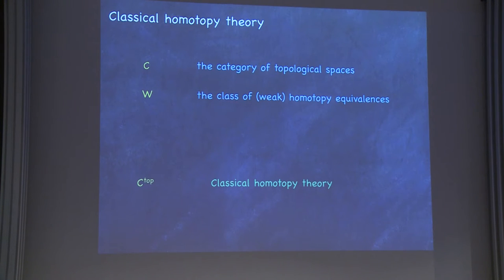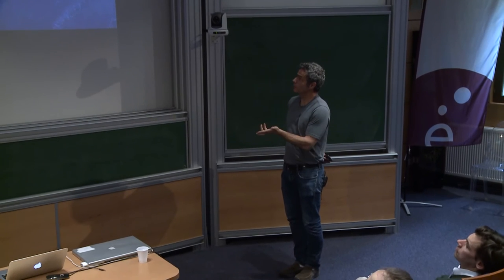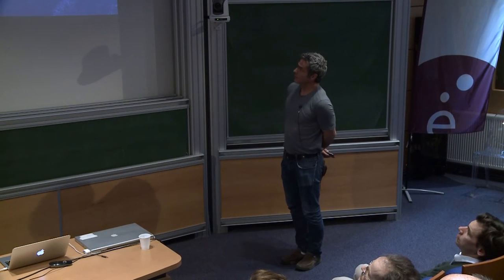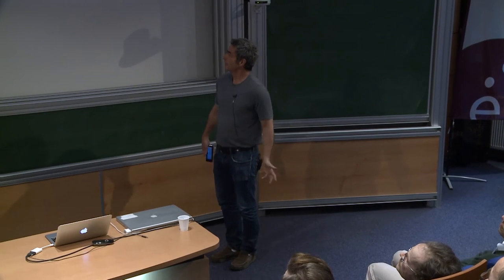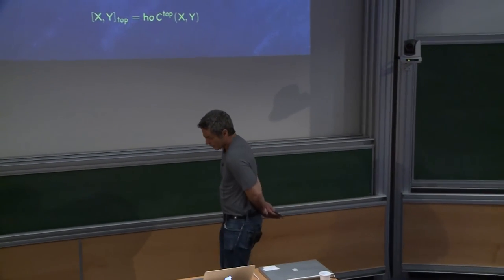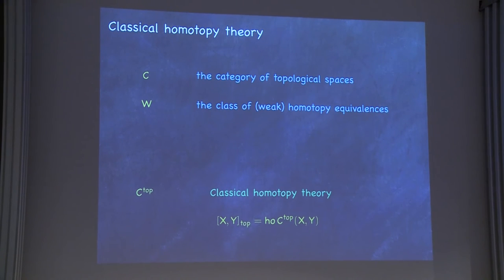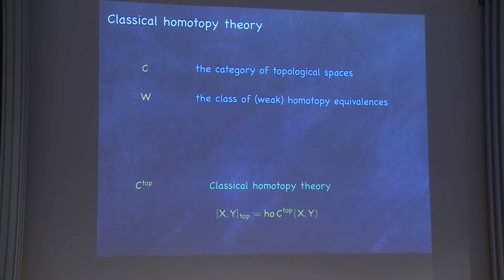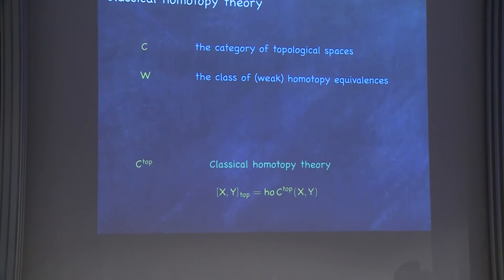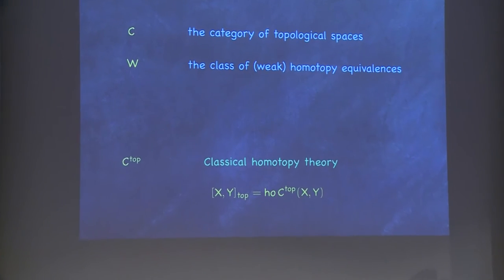The classical example is topological spaces where the class of weak equivalences are those that induce isomorphisms of homotopy groups at all possible choices of base points. That becomes classical homotopy theory, and the homotopy category is the usual homotopy category of CW complexes. I'm mentioning this to locate the origins of the terminology and also to introduce some notation. Nobody in their right mind ever writes out that symbol — it's usually abbreviated with square brackets — so whenever I talk about abstract homotopy theory, I'll just use square brackets with some subscript to indicate the context.